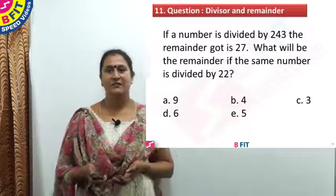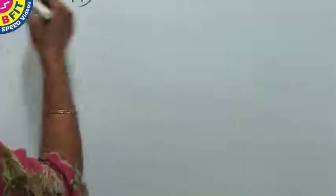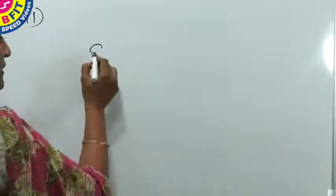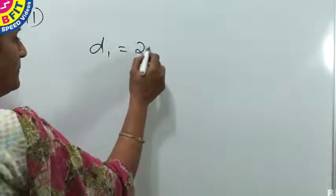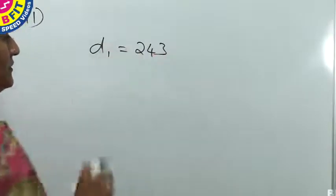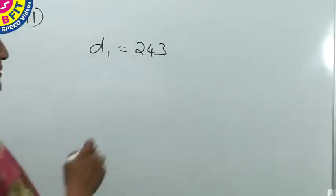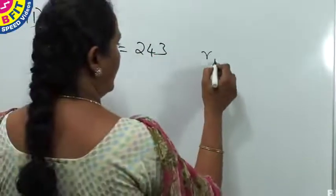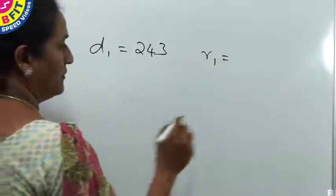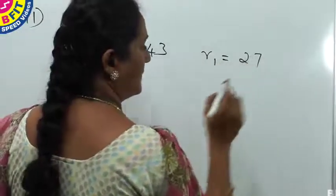We will see the working for question number 11. A number is divided by 243. We take that as the first divisor, d1 = 243, and the remainder we take as r1 = 27.